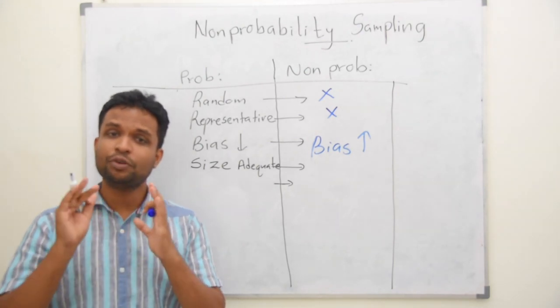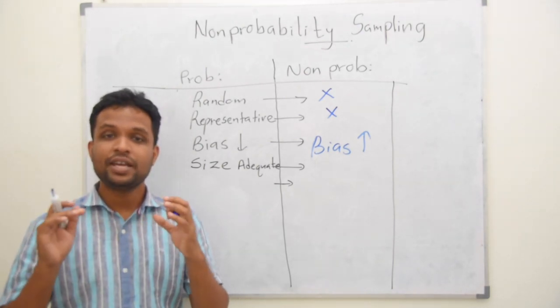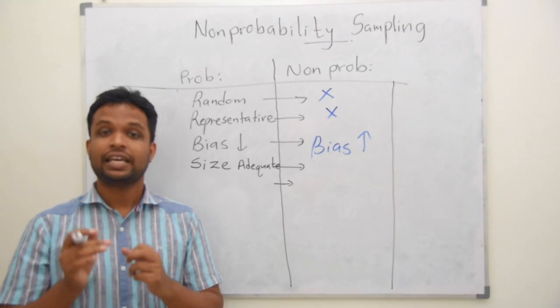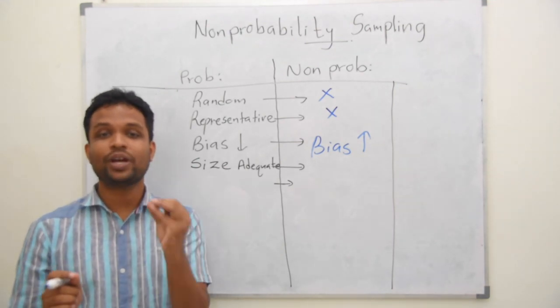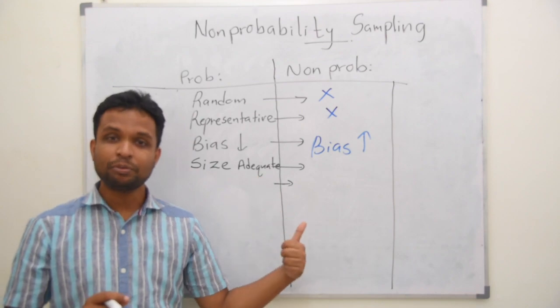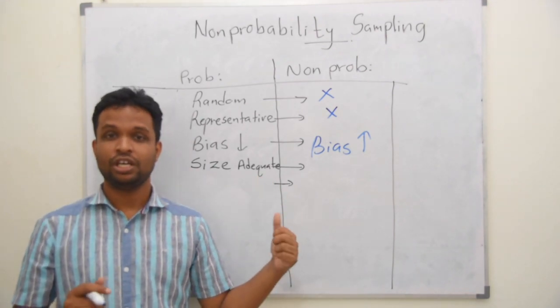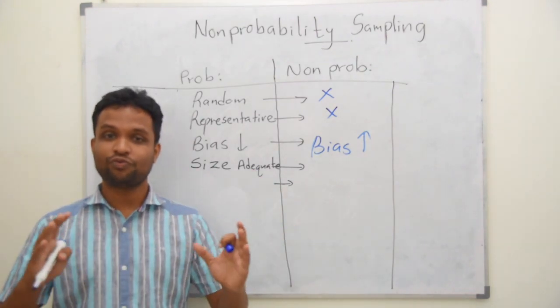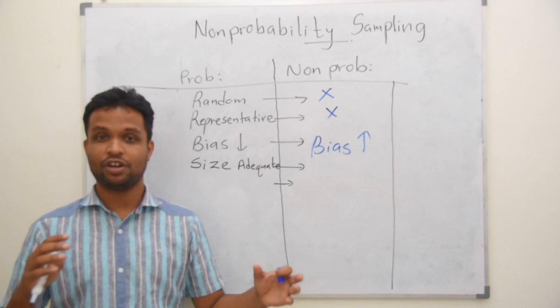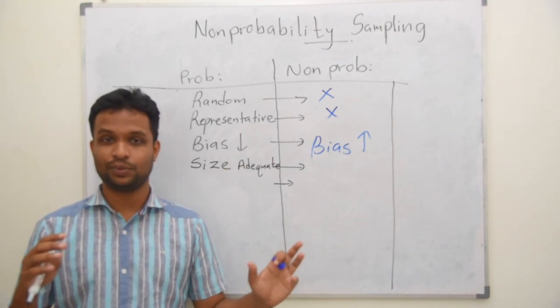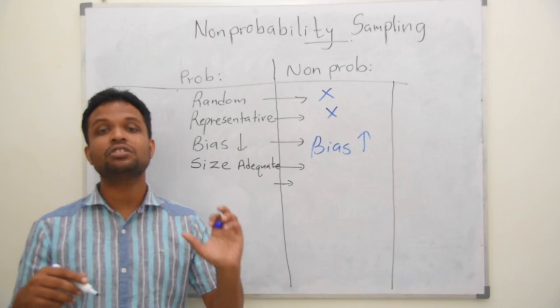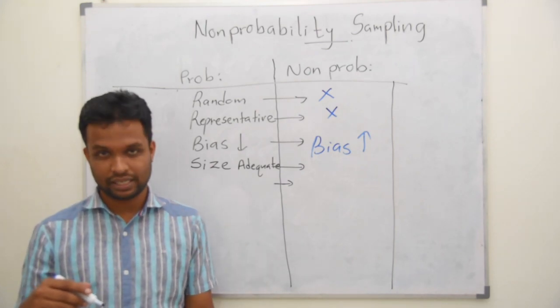Then I told you from the beginning, one of the main steps is calculating the adequate sample size. In non-probability sampling also, even though we do not follow random procedure, we are not interested in representative sample, it is important to maintain adequate sample size. The sample must be adequate.